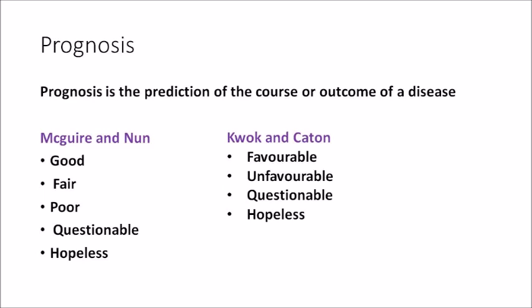Moving on to prognosis — once we diagnose the disease we predict its course. Prognosis is the prediction of the course or outcome of a disease. Maguire and Nun gave prognosis classes as good, fair, poor, questionable, and hopeless. Quirk and K10 gave only four classes: favorable, unfavorable, questionable, and hopeless.